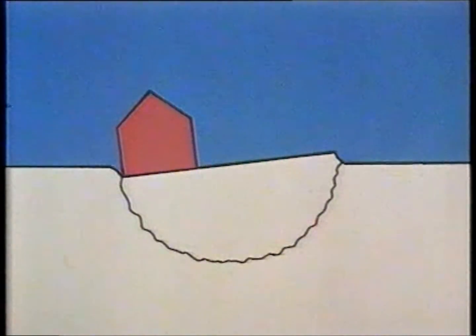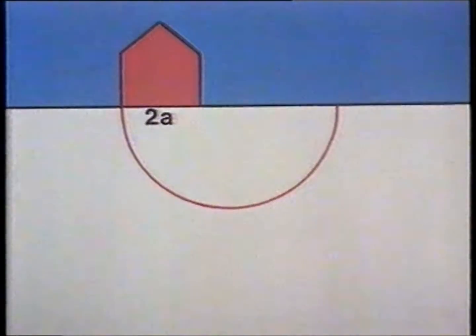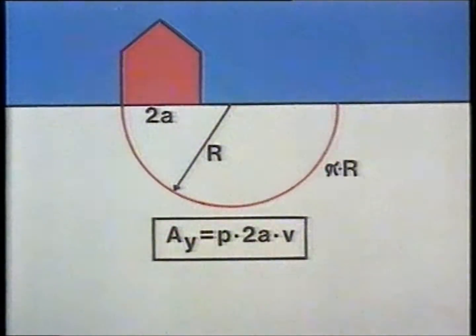Let us assume this deformation pattern. We then have a semicircular upper bound field. The ground line of the house is 2a. The radius of the circle is r. The length of the line of discontinuity is pi times r. The rate of external work is p times 2a times the velocity of the house.